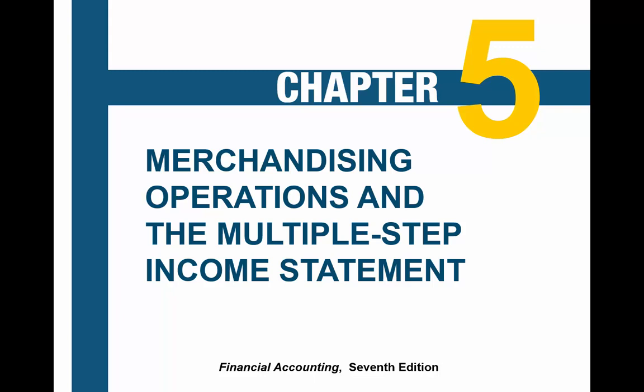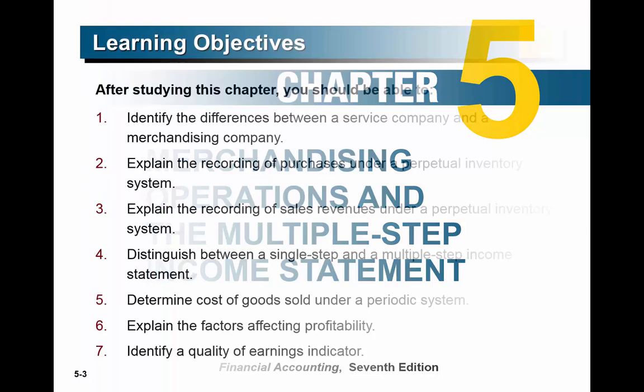Chapter five is about merchandising operations. The businesses we've looked at so far have been service-based businesses — businesses that sell a service to somebody. A doctor's office would be a service-based business; you don't go there and buy merchandise, you buy medical care. A merchandiser is a business that sells inventory, sells stuff to people. They'll also introduce the multiple-step income statement, which won't be a big stretch since you're already beginning to feel comfortable with the income statement.